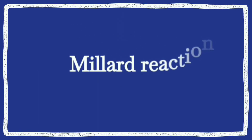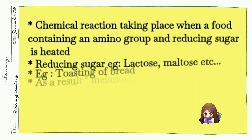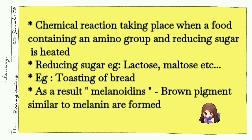The second example is the Maillard reaction. What happens is that when a food containing an amino acid or amino group and a reducing sugar is heated, this results in the production of brown pigment or brown mass. A simple example is toasting of bread — bread contains protein, so that protein contains an amino group, and bread also contains reducing sugar. What is a reducing sugar?